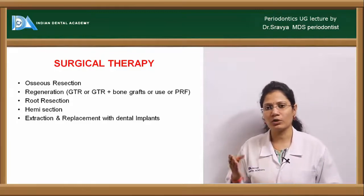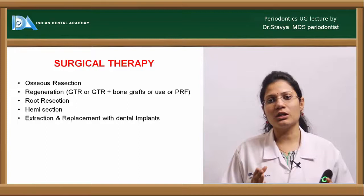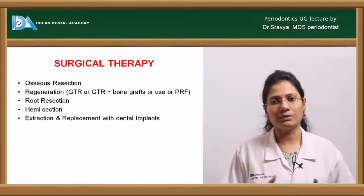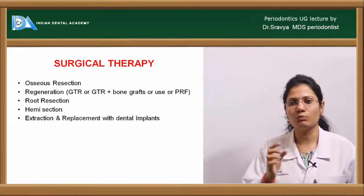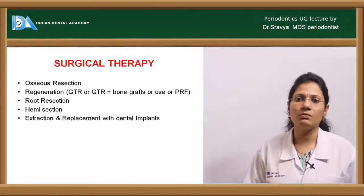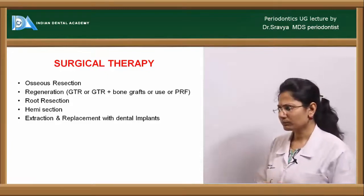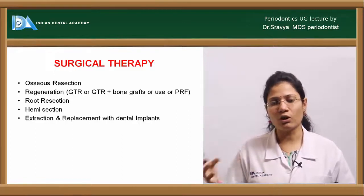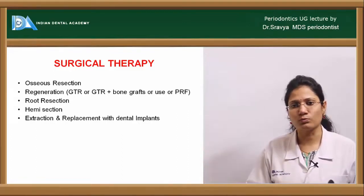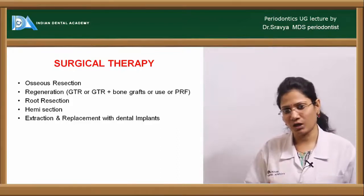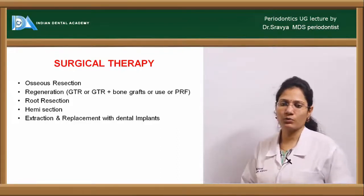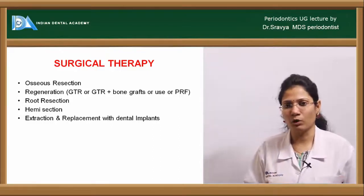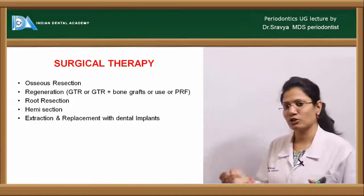Root resection involves resecting the furcation-involved root while leaving the other root and crown structure in place — also called root amputation. Hemisection involves dividing the tooth and removing one root along with half the crown portion. Bicuspidization involves dividing the tooth into two premolar-like units and replacing with crowns.